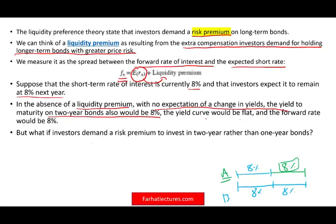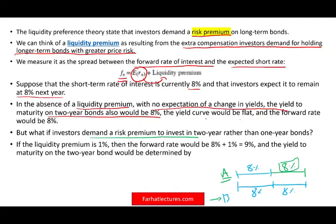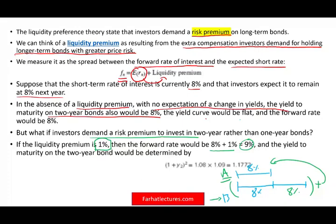Under the liquidity preference theory, investors will demand a risk premium to invest in the two-year bond B. They will not accept 8% for two years, because you are locking your money for two years. So if the liquidity premium is 1%, then the forward rate will be 8% plus 1% equals 9%. For investment B, you will not accept 8% and 8% — you want to earn something above 8% because you're locking your money for two periods.